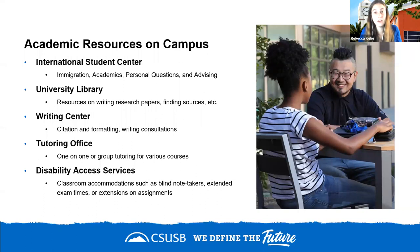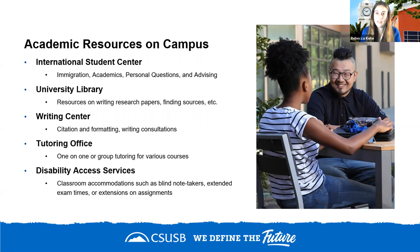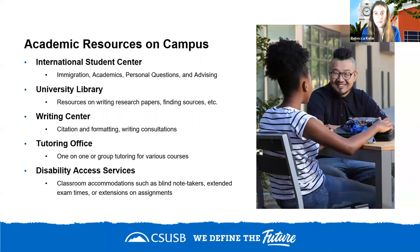Most universities also have a writing center, typically led by upperclassmen students who are English or writing majors. You can bring a draft paper and they'll review the flow, whether it addresses the writing prompt, and whether citations and formatting are correct. For example, if you're unsure how to format an MLA citation, bring your draft to the writing center and they will tell you what corrections to make.